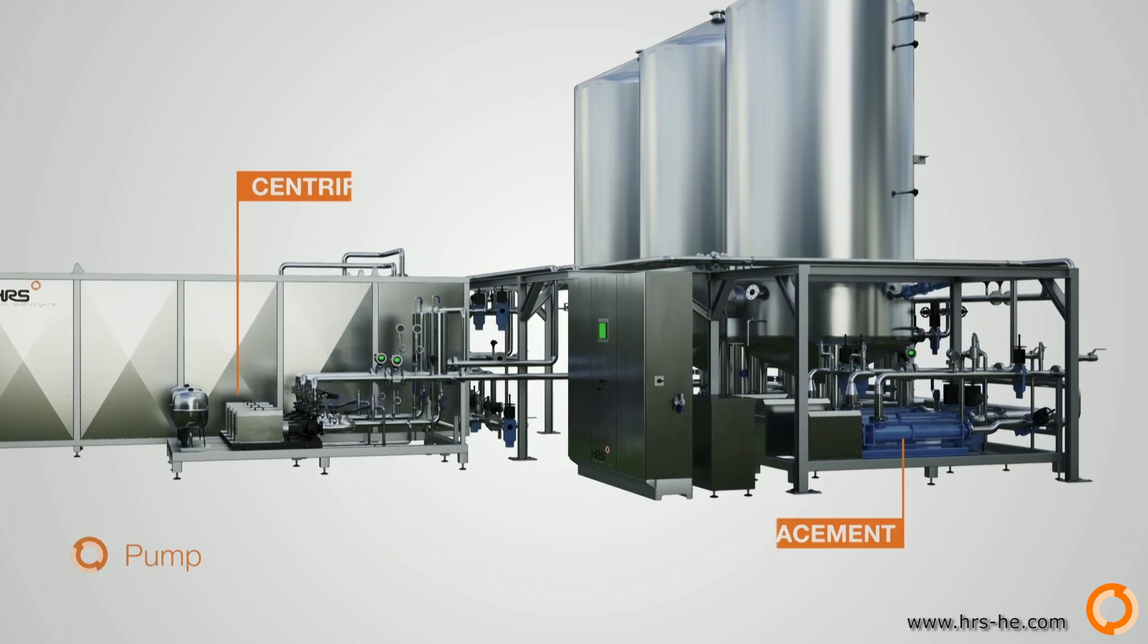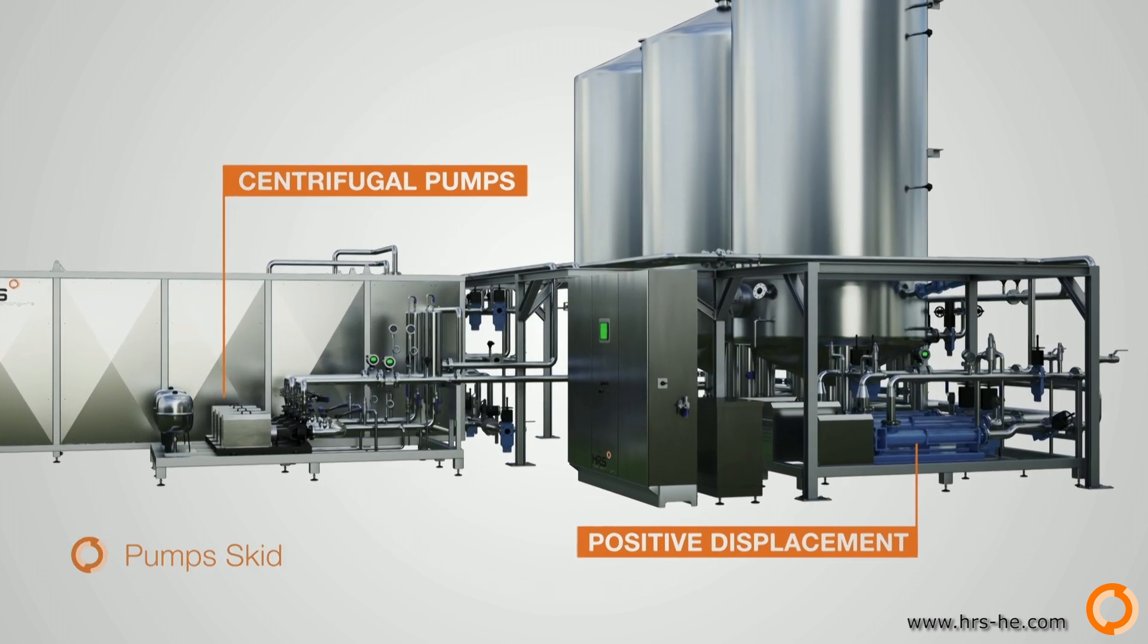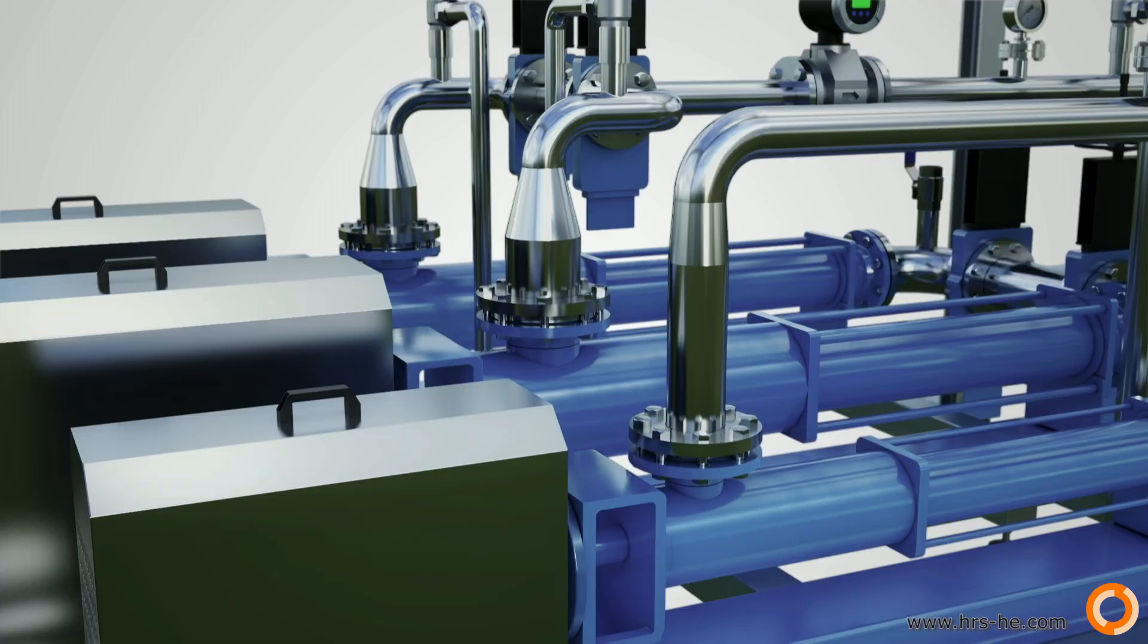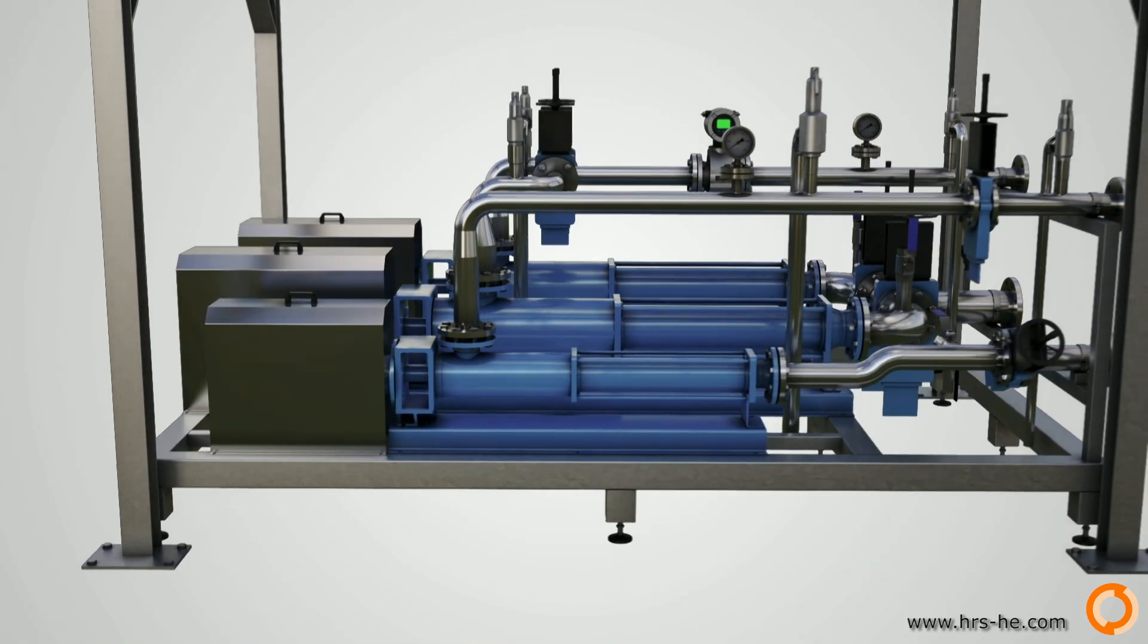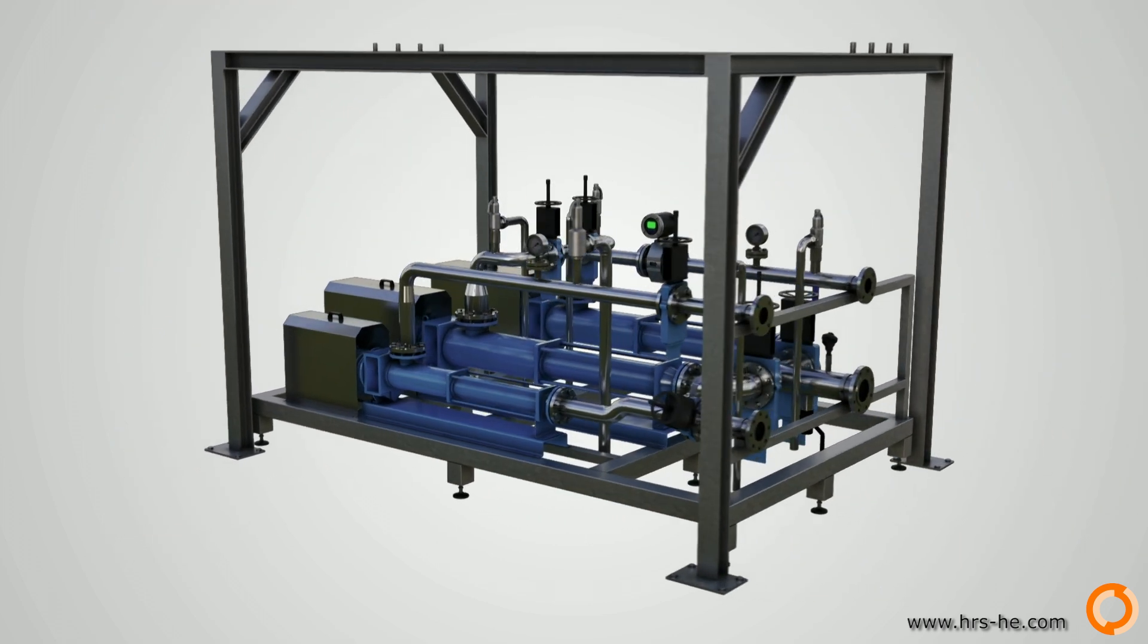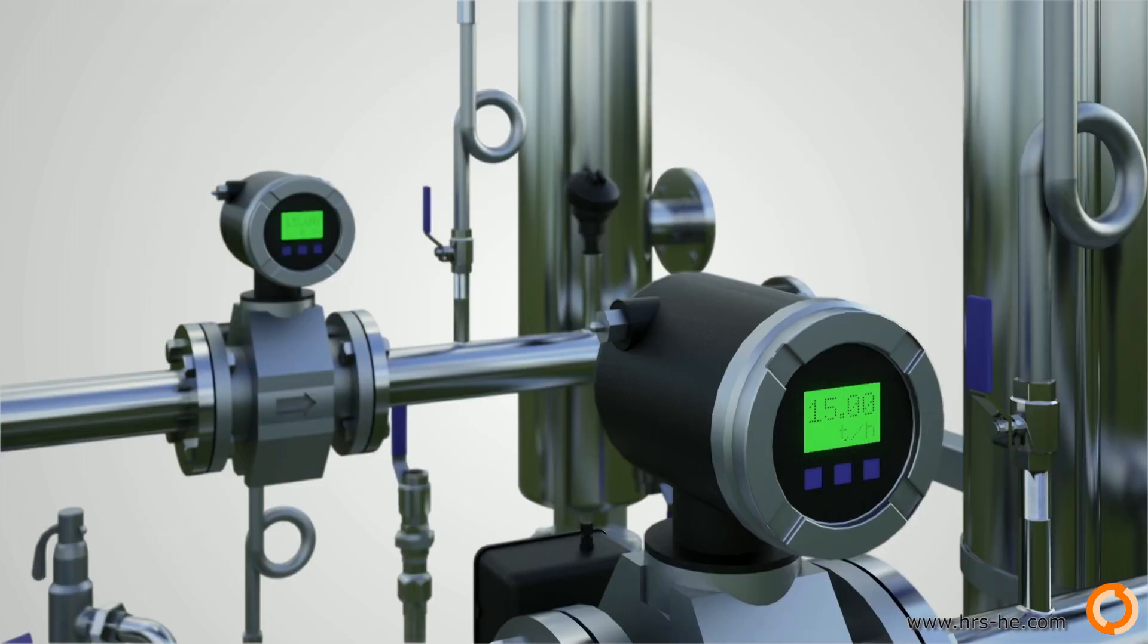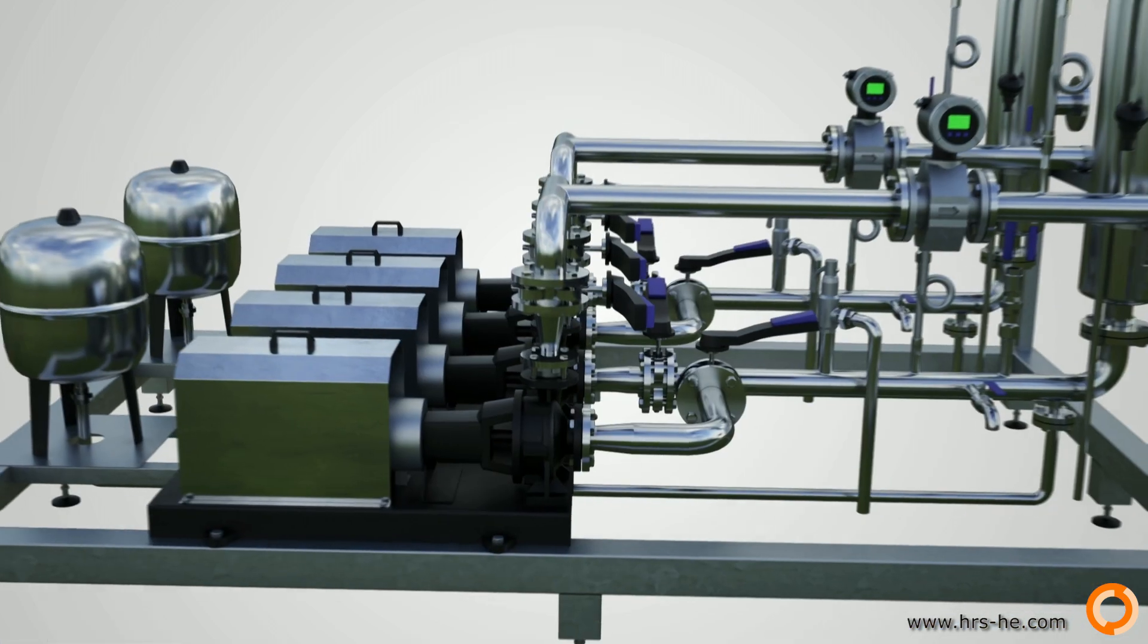All the process pumps are contained on one single skid. Positive displacement pumps are used to pump the sludge through the heat exchangers and into the holding tanks. Centrifugal pumps are used to pump the water in the heat recovery water loop.